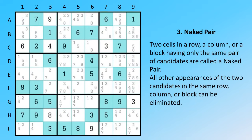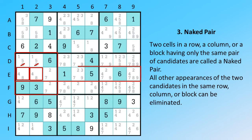Two cells in a row, a column, or a block, having only the same pair of candidates, are called a naked pair. All other appearances of the two candidates in the same row, column, or block can be eliminated.